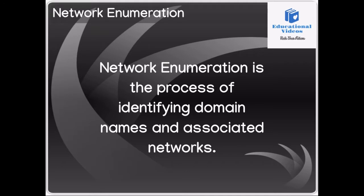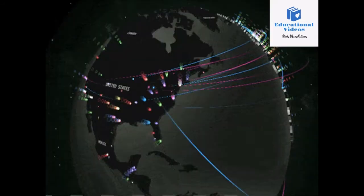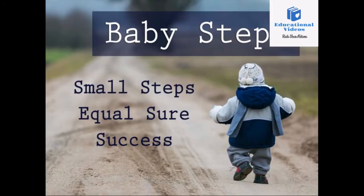The next technique hackers use is network enumeration. Network enumeration is the process of identifying domain names and associated networks. Hackers perform different queries to get the target's registrar name, such as registrar query, organizational query, domain query, network query, and POC query. It is up to you to research these queries further — if you succeed, congratulations, you have entered the world of hacking, but remember it is just a baby step and you have to do a lot of hard work to become a pro.